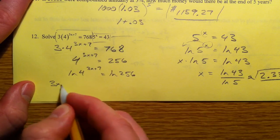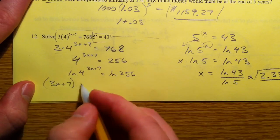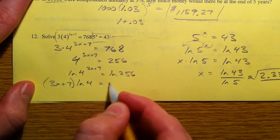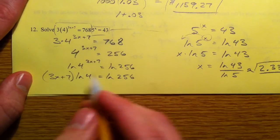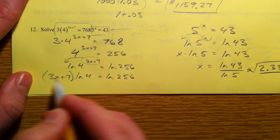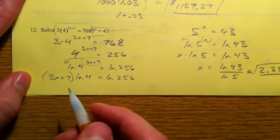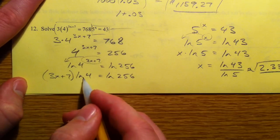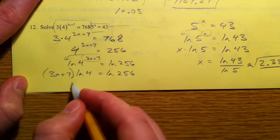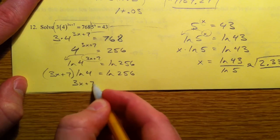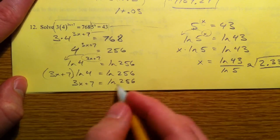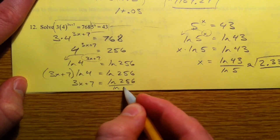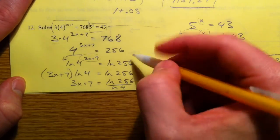The natural log of 4^(3x+7) equals the natural log of 256. Bring the 3x+7 down in front and leave it in parentheses like that. It's easier if you take care of the natural log of 4 and say 3x+7 equals the natural log of 256 over the natural log of 4.